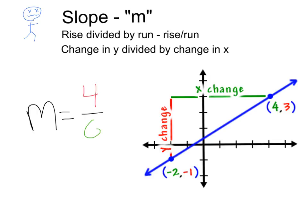That's going to be a change in x, or a run, of 6. So, we can take our m equals 4 over 6, and simplify it. We always like to simplify our slope. That'll give us m equals 2 thirds, and there we have our slope.